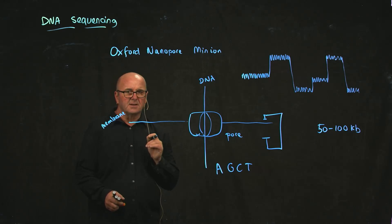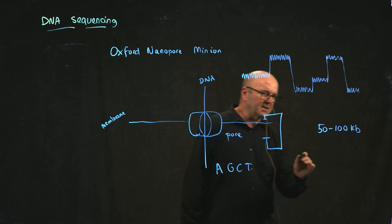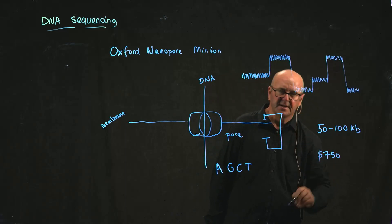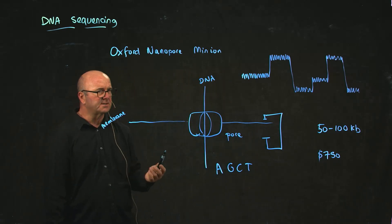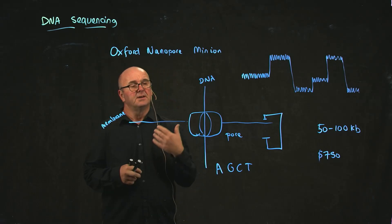The technology is pretty cheap - somewhere in the region of about $750 for one sequencing run, and that generates on the order of gigabytes of data. It's cheap, and the protocols to use it are pretty quick and simple.